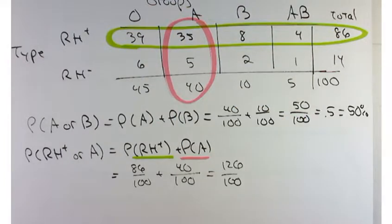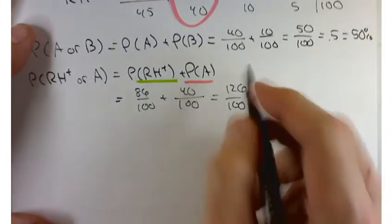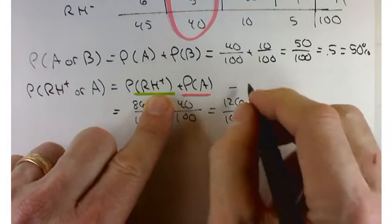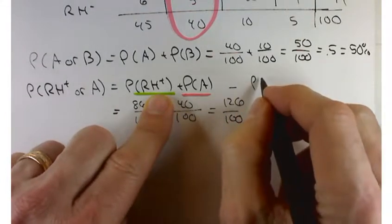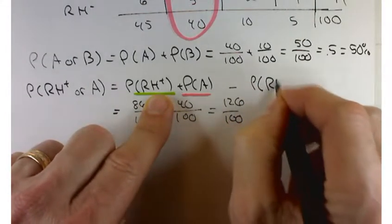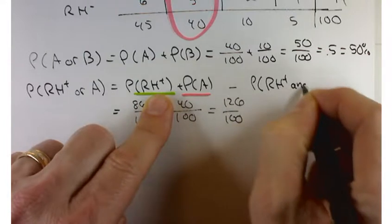So if I wanted to fix this, what I would have to do is subtract off the intersection of these two. So I'll subtract off probability of Rh positive and A.